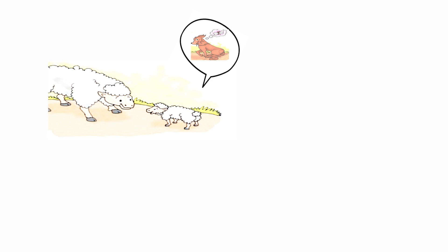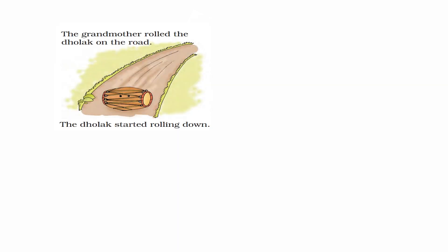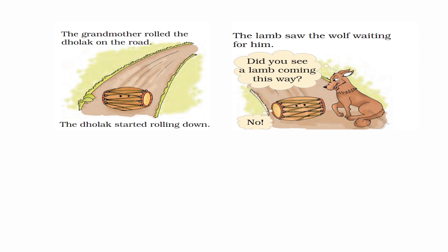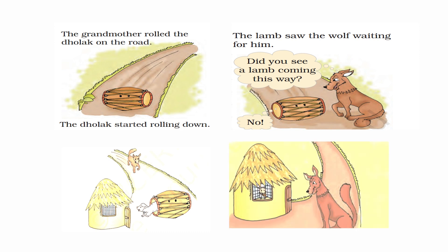After meeting his grandmother, when the lamb was about to return, he told his grandmother about the wolf. The grandmother gave him an idea. She said, 'Go and hide yourself in a dholak. I will do the rest.' The grandmother then rolled the dholak down the road at a fast speed. The wolf was waiting and asked, 'Did you see a lamb coming this way?' The lamb said 'No' from inside the dholak. The wolf grew suspicious and ran behind the dholak, but before he could catch it, the lamb reached home safely, thankful to his wise grandmother.